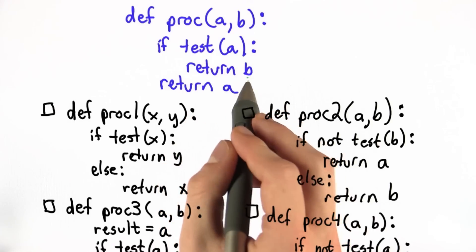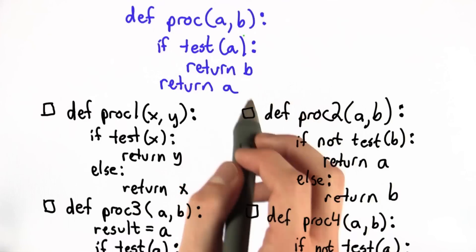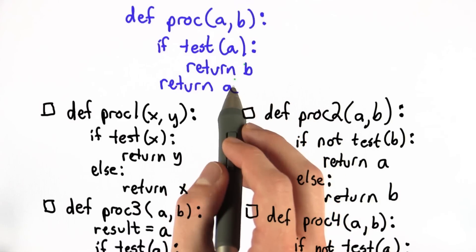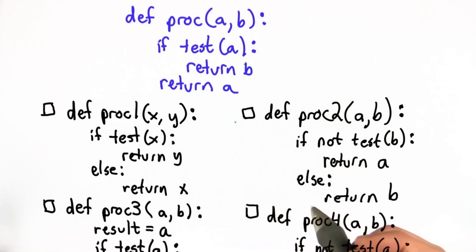If test a is true, then we return the second parameter, b. If test a is false, we return the first parameter, a. That's what we need to check in each of these functions.